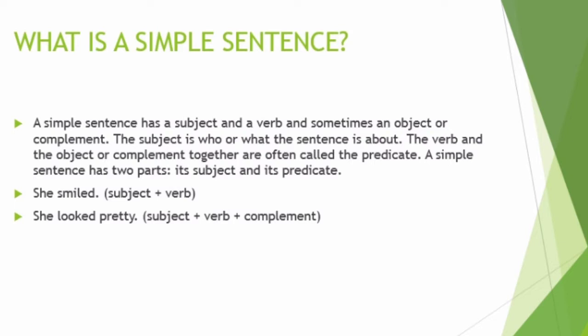For example: 'She smiled.' Here, 'she' is the subject and 'smiled' is the verb — a simple sentence with no subordinating or coordinating clauses, no conjunctions, no comma or punctuation mark, just a straightforward sentence. Another example: 'She looked pretty.' Here 'she' is the subject, 'looked' is the verb, and 'pretty' is the complement. This is also a simple sentence — just a subject, verb, and a little explanation.